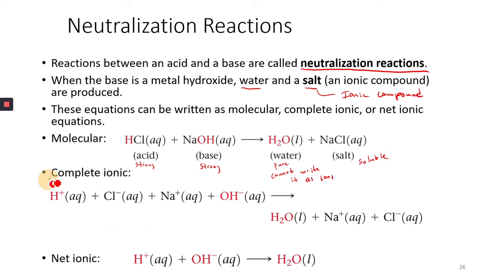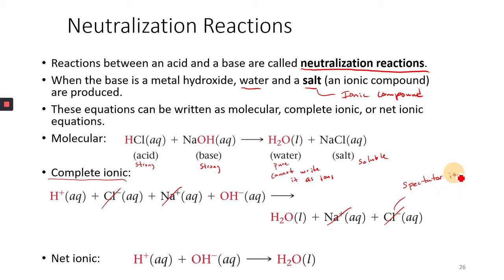So here we have our complete ionic equation with all ions in it. The ions that are the same on both sides can be crossed out — they are known as spectator ions. Once you cross them out, what you're left with is your net ionic equation. When you have a strong acid and a strong base neutralizing each other, your net ionic equation will be H+ + OH− → H2O.